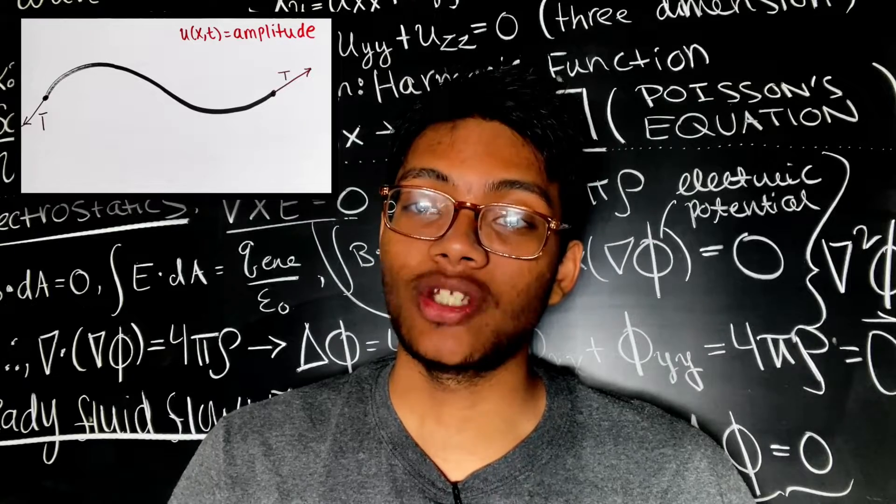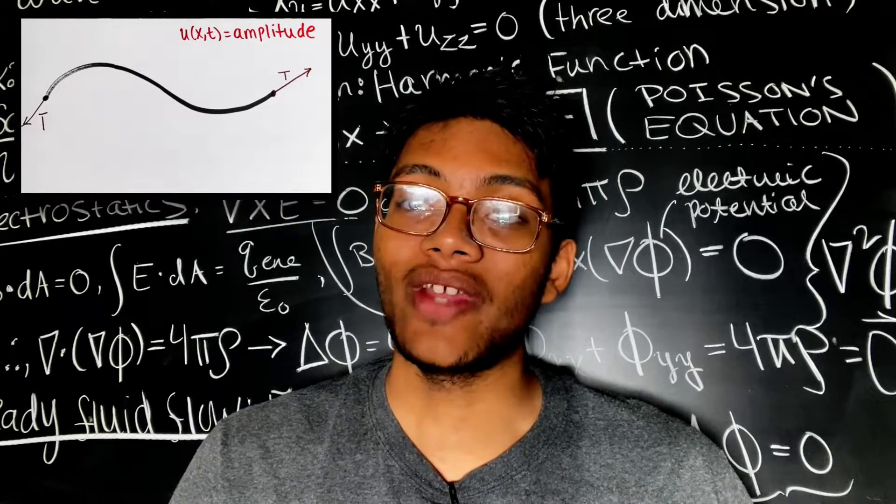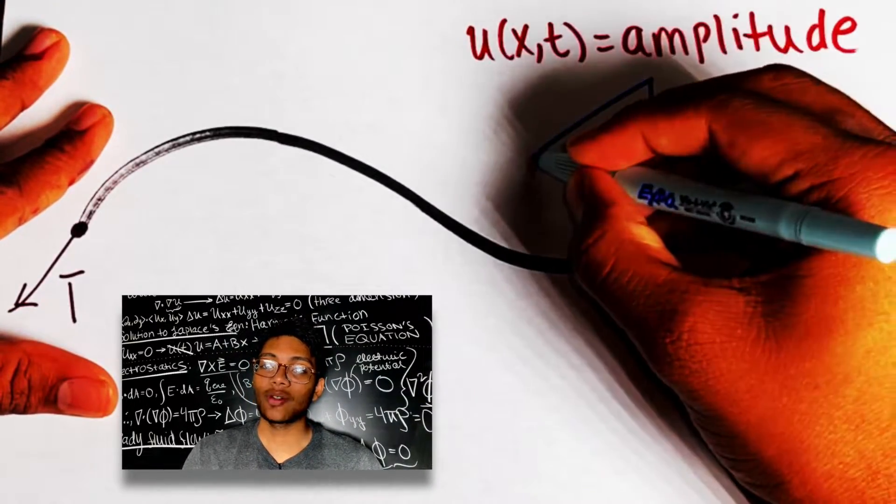So for example, at a certain position x and a time t, the amplitude of the wave would be u(x,t). If we analyze a zoomed-in section of the wave, we can see how the wave behaves.